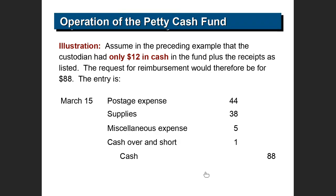This is the end of the chapter. In both journal entry cases — whether $1 is missing or not — the entries are the same concept. In both cases the replenishment amount is $88. You can record through petty cash and then remove it from petty cash, or go directly to cash. Cash over and short is an expense account that appears under operating expenses in the income statement.